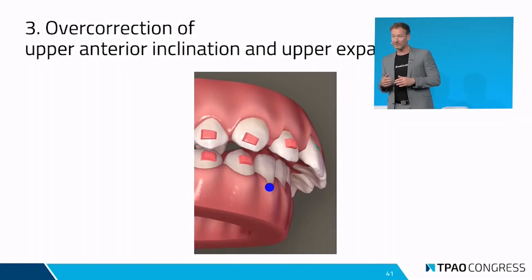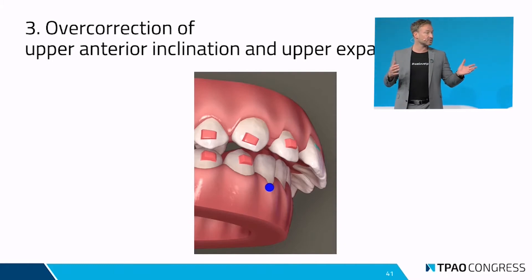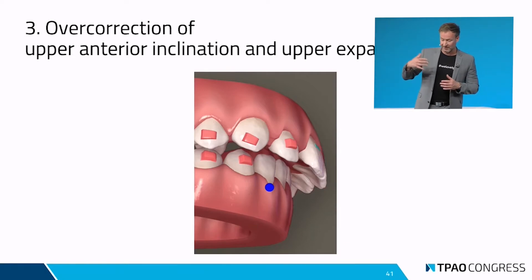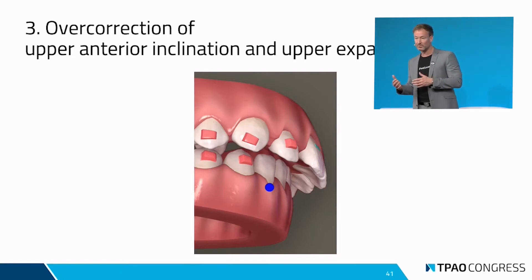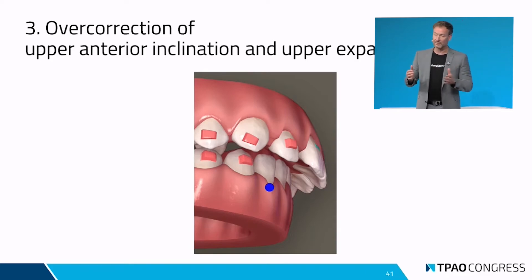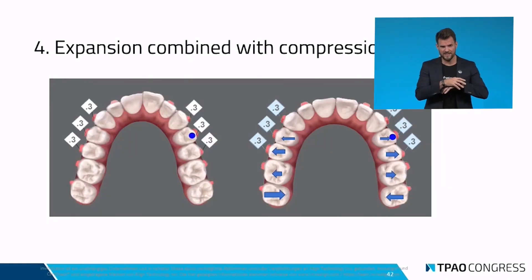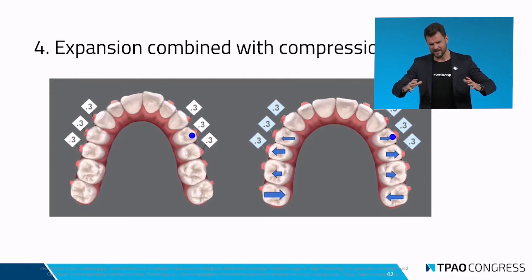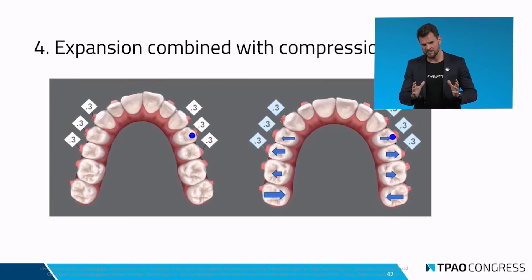Also auch gerne das Ganze überkorrigieren — das haben wir gerade schon besprochen: in der Prima-Phase entsprechend Freiraum schaffen, auch in der Überkorrektur, weil wir wissen, dass wir 100 Prozent ohnehin nicht erreichen. Wir gehen von 75 Prozent aus. Es darf also gerne deutlich überkorrigiert werden, sowohl in der Expansion als auch in der Proklination. Wenn wir viel expandieren, expandieren wir mittlerweile simultan und versuchen, wenn es der Case hergibt, gleichzeitig etwas Kompression in die Siebener einzubauen.